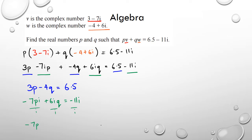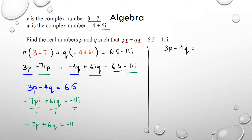My second equation becomes minus 7p plus 6q equals minus 11. So I now have simultaneous equations: 3p minus 4q equals 6.5 and negative 7p plus 6q equals negative 11. From this point you can just put this directly into the graphics calculator to get your two values for p and q.